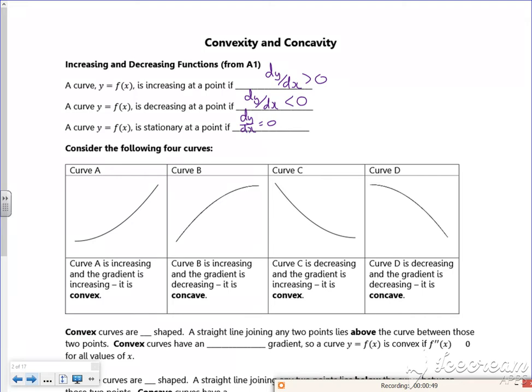So I'm going to look at these three bits on these curves. So if you look at curve A, it's got a positive gradient. Now if I draw three tangents on it - one at the bottom, one in the middle, one at the top - you can see that the value of the gradient is increasing.